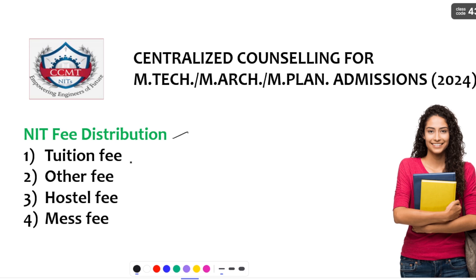Fee distribution: it is distributed into tuition fee, other fee, hostel fee, and mess fee. Tuition fee you all know about. Other fee includes library fee, laboratory fee, admission fee, student welfare fee, and all other fees. Hostel fee includes room rent, electricity, and water charges. Mess fee covers whatever food you are going to consume. For each and every NIT, the fee is distributed in the form of all these components.